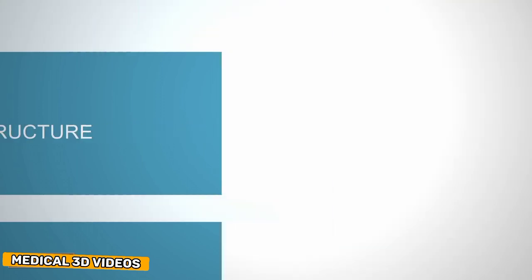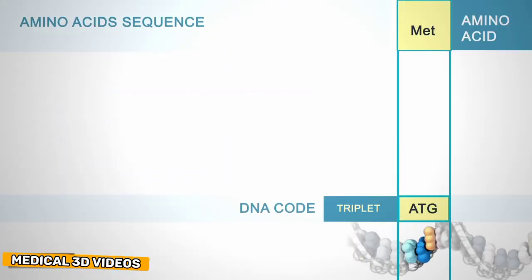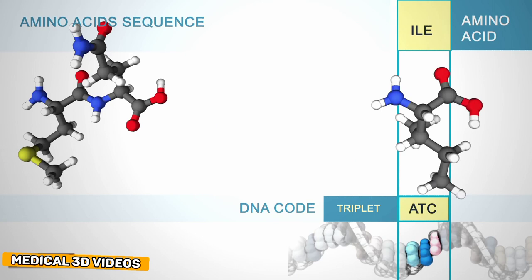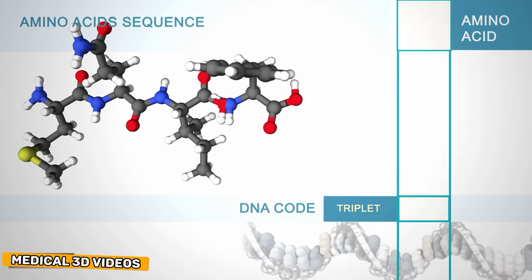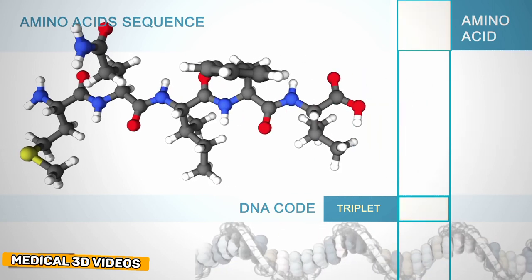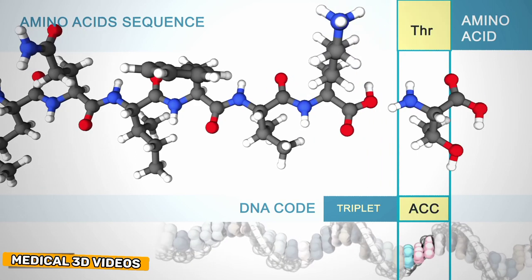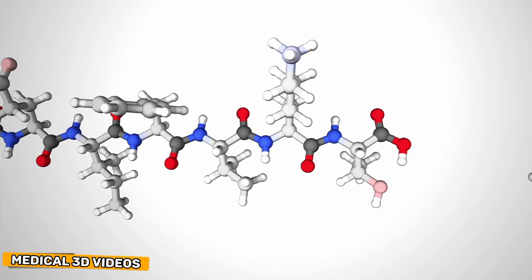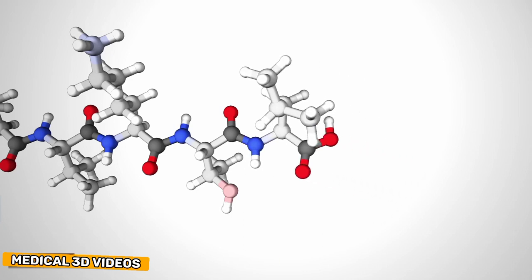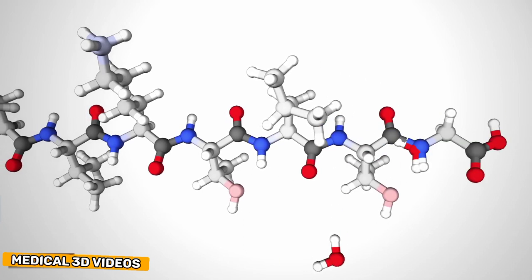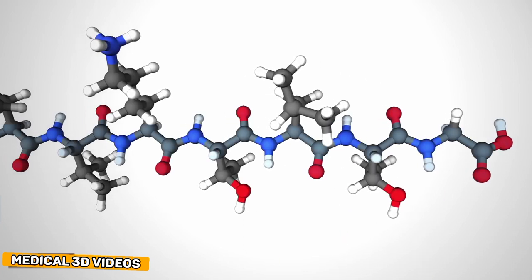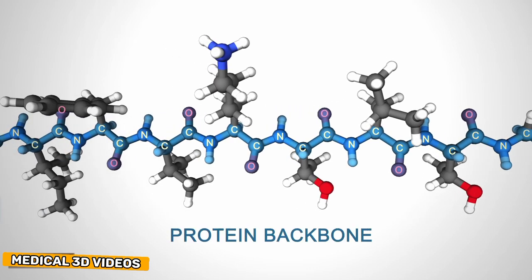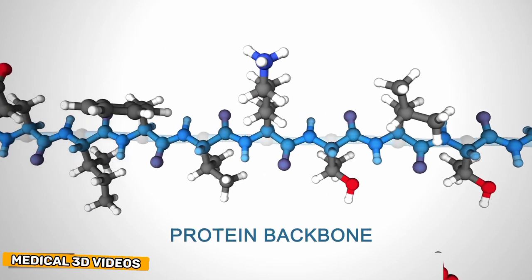Primary structure. The primary structure of a protein is the linear sequence of amino acids as encoded by DNA. The amino acids in a protein are joined by peptide bonds, which link the amino group of one amino acid to the carboxyl group of another. A water molecule is released each time a peptide bond is formed. This linked series of carbon, nitrogen, and oxygen atoms is the protein backbone.